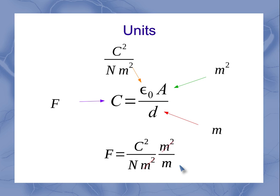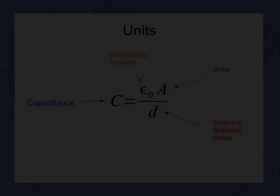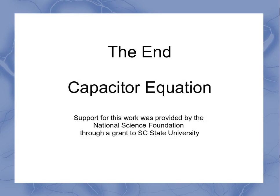Well, those meter squares are going to cancel, leaving me with a coulomb squared per newton meter equal to a farad. Now, I can take this a step further, because I recognize that a newton meter is a joule. So a farad is also equal to a coulomb squared per joule. So that's your parallel plate capacitor equation.